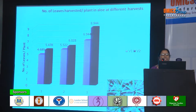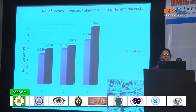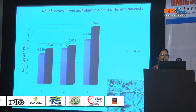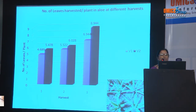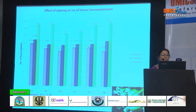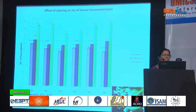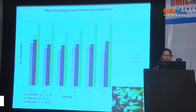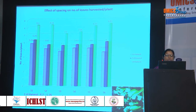This slide shows the number of leaves harvested per plant at different harvests. There is a significant difference between the two varieties — yellow flowering type produced more leaves per plant during first, second, and third harvests. In the third harvest, yellow flowering type produced 8.94 leaves per plant, whereas orange flowering type produced fewer. Regarding spacing, there is no significant difference; the average range is 4.72 to 5.76 in the first harvest, 5.5 to 6.26 in the second, and 7.12 to 8.43 in the third.